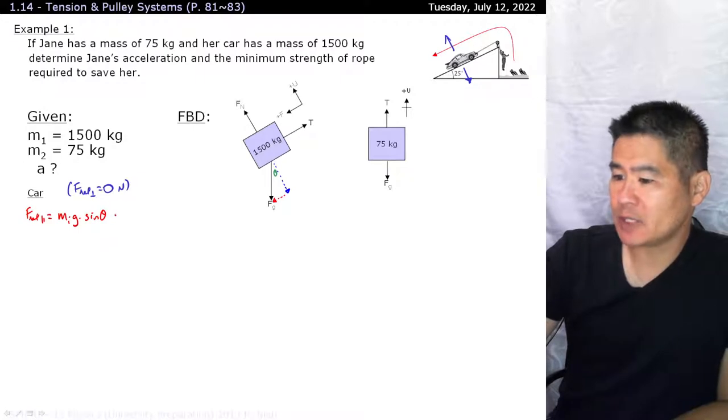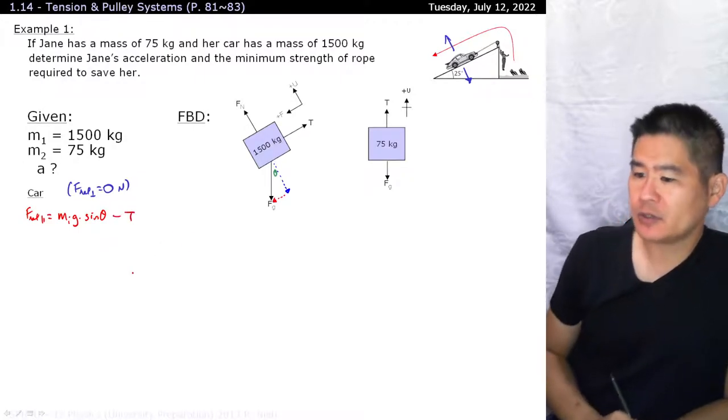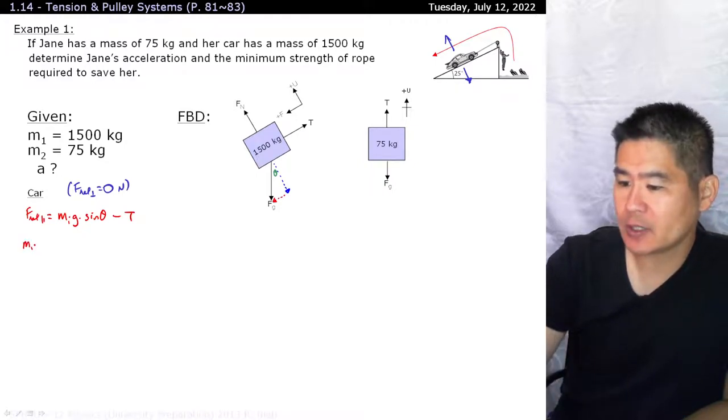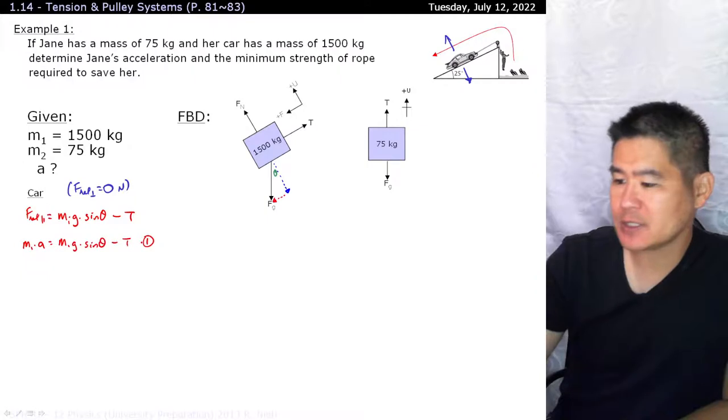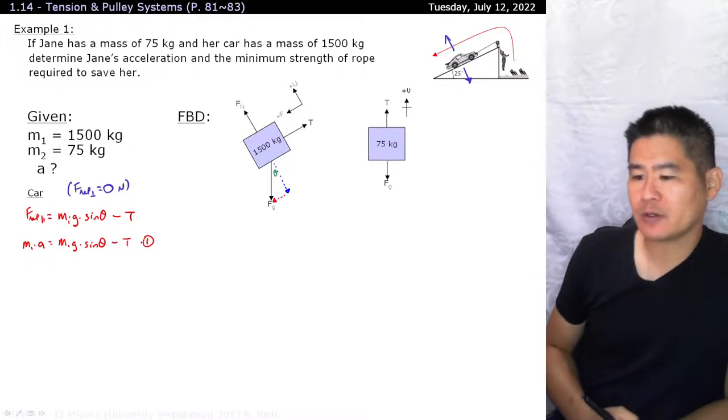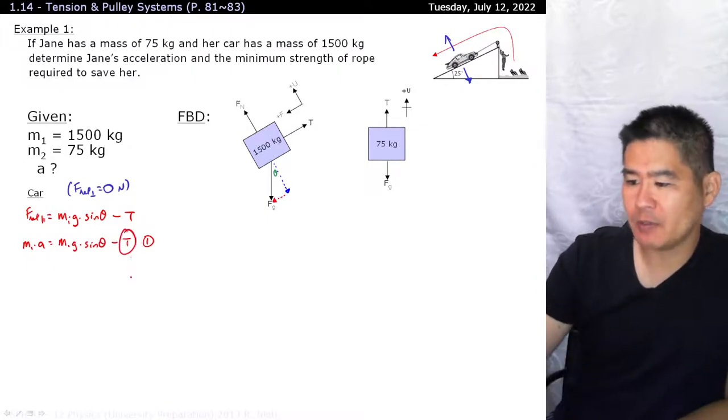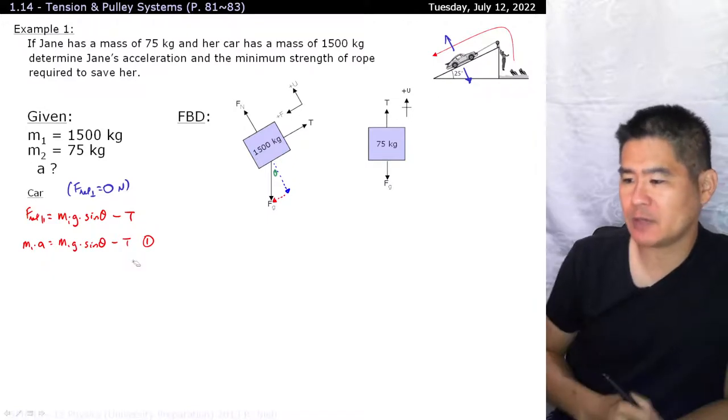What's avoiding it from accelerating at its full potential is tension. We also know that F net is equal to MA, so M1 times A is equal to M1 times G times the sine of theta minus tension. And that's it. We can't move on any further.